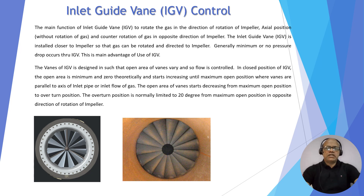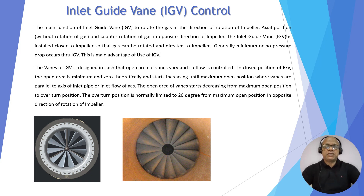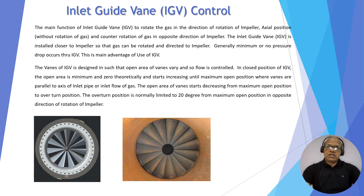For IGV or inlet guide vane control, the gas can be turned in the same direction as impeller rotation — this is called the pre-whirl condition. It is the maximum closure position, from 90 degrees (closed) to 0 degrees (full open). If the IGV is between 90 degrees and full open, it is considered the pre-whirl condition. IGV can also feed the gas axially to the impeller — that is the axial position. IGV can also counter-turn the gas, meaning in the opposite direction to the impeller rotation — that is called the overturned position, and it is limited to approximately 0 to 20 degrees.